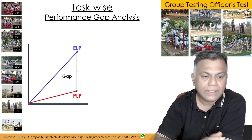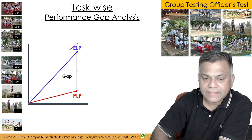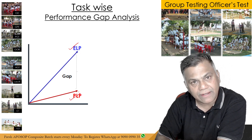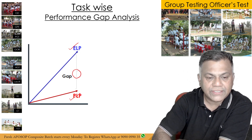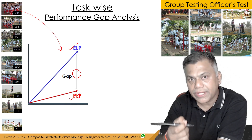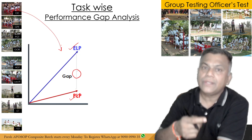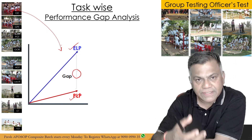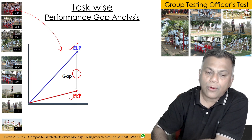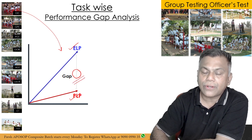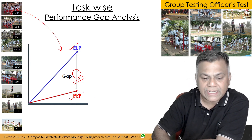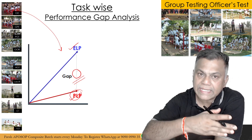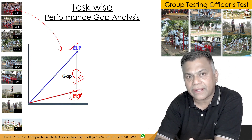For example, in Group Discussion, the Expected Level of Performance (ELP) may be high but your Present Level of Performance (PLP) can be low, creating a gap. In the GD, this gap can be due to poor communication skills, poor public speaking, lack of content, not knowing current affairs, international or national affairs, sports or defense topics, and lack of confidence. All these things widen the gap, so your present level of performance will be low, and your potential to grow will also be low.